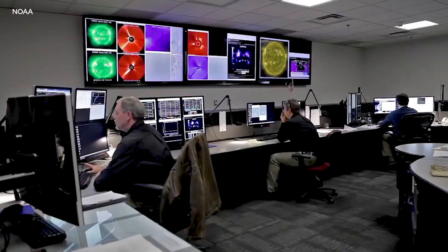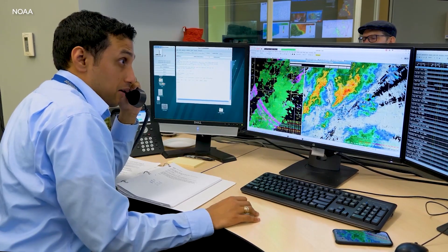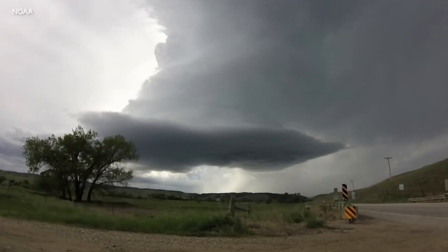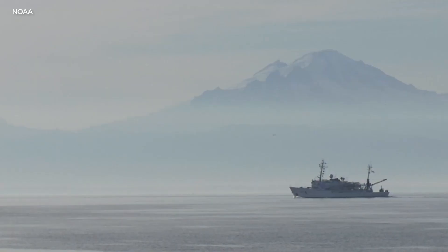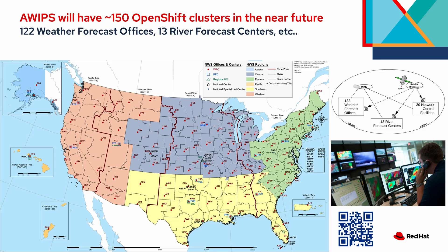VMs at the edge are used in specific use cases. Virtualization is traditionally a data center play, but one of our customers, NOAA — the National Oceanic and Atmospheric Administration — created environments with remote weather stations that are unmanned. There's a bunch of hardware out there that needs to run all the time; the applications there collect data that gets processed and sent elsewhere.